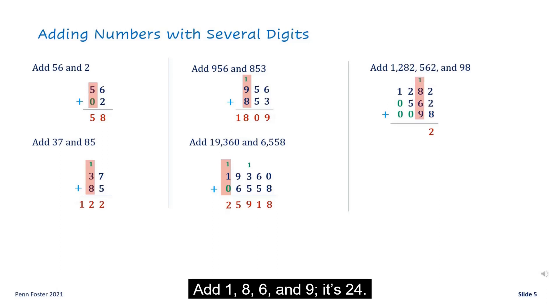Add one, eight, six, and nine. It's twenty-four. Write four and carry two over the third column. Then add two, two, five, and zero. It's nine. Finally, add one, zero, and zero. It's one.